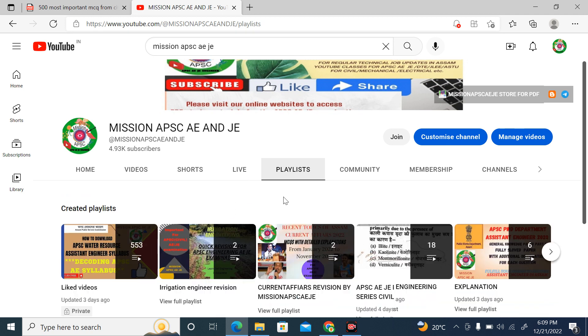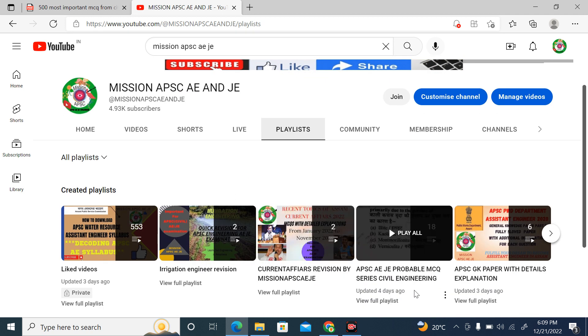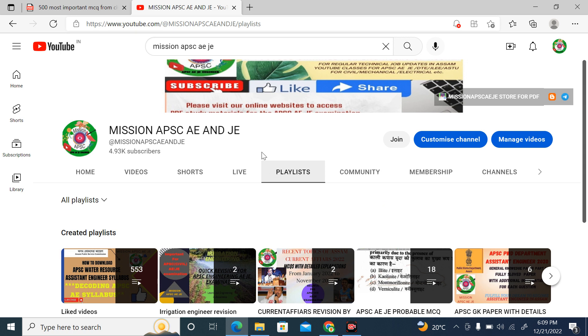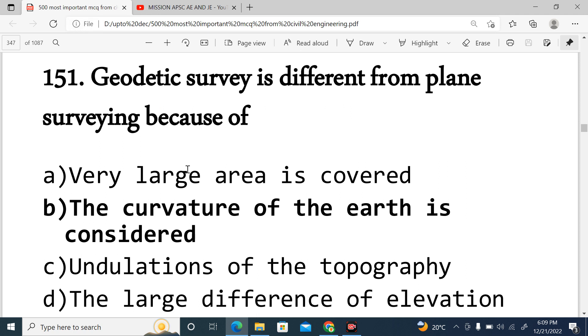Now we are going to the playlist of APSC AE Probable MCQ series of Civil Engineering. We are going to talk about Part Number 5 to discuss. We are going to talk about the first question. First question, Question Number 151.